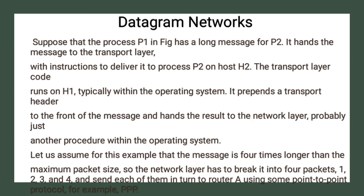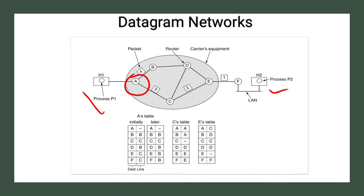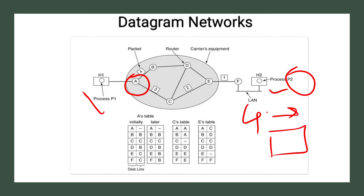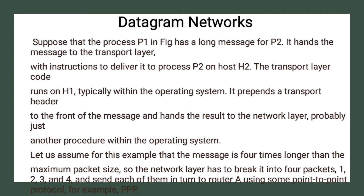The network layer has to break the message into four packets — one, two, three, and four — and then it sends each of them in turn to router A using a point-to-point protocol. So it is actually one message which is divided into four packets that the network layer sends to the next process.